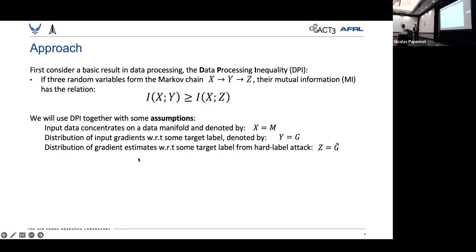This is reasonable because we know that ConvNets can encode image information into a low-dimensional latent representation. And so in place of X, we'll use M. Second, we assume that there is a distribution of input gradients with respect to some target label. This is going to be true regardless because we know that there is always going to be some direction we can traverse to achieve a target label that the adversary wants. So in place of Y, we'll use G.